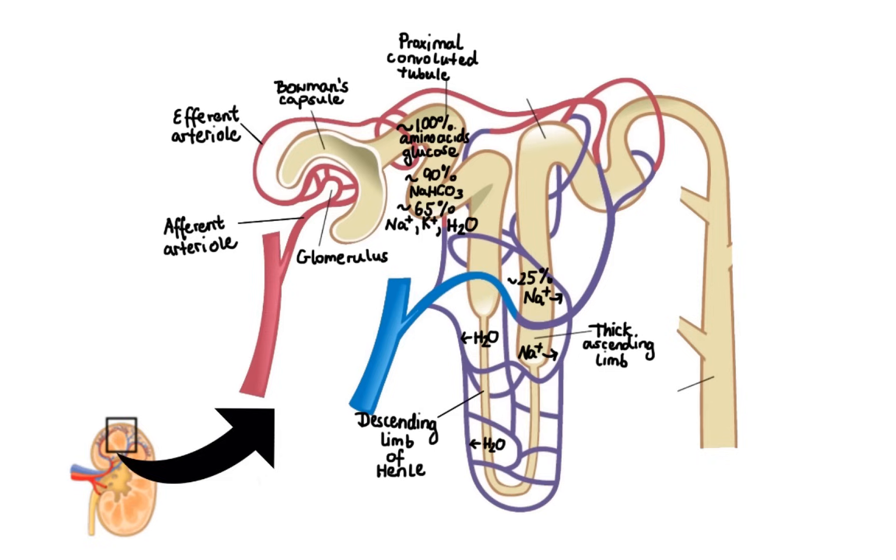Next, the filtrate travels through the distal convoluted tubule. Here about 5-10% of sodium chloride gets reabsorbed, mainly via sodium chloride cotransporter. This part is also relatively impermeable to water, so at this point the filtrate becomes more diluted.